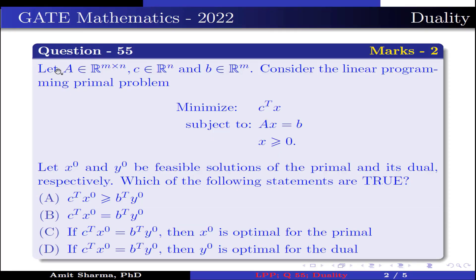The question states that A belongs to R^(m×n), C belongs to R^n, and B belongs to R^m. Consider the linear programming primal problem: minimize C^T x subjected to Ax = b, where x ≥ 0. Let x0 and y0 be the feasible solutions of the primal and dual respectively. Which of the following statements are true?